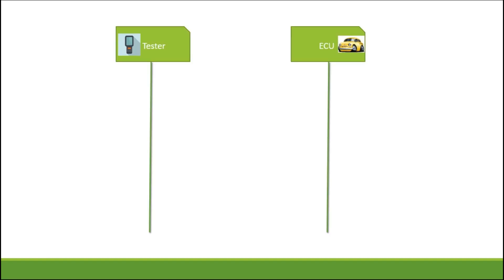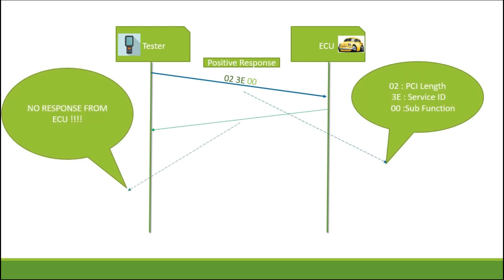So you will get a positive response, or NRC maybe, depends. Suppose this bit is set as 1, in that sense, the ECU won't send any responses, but NRC is independent of this bit.